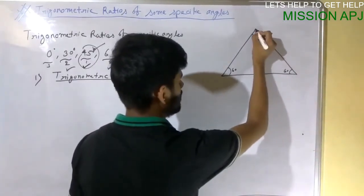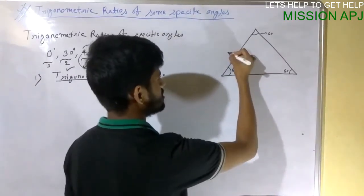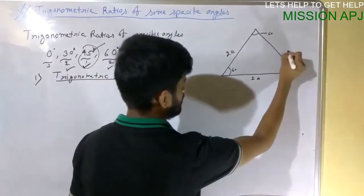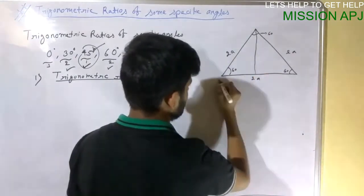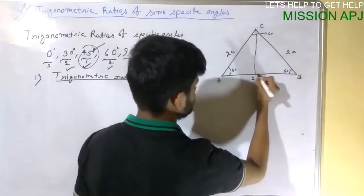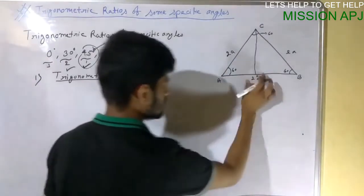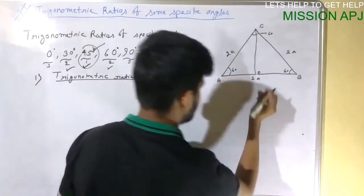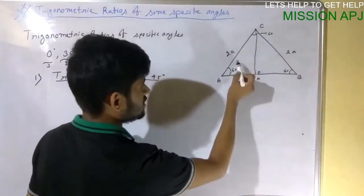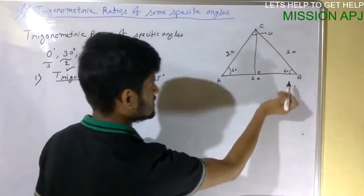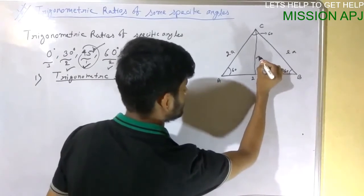Let us consider the side value of the equilateral triangle as 2a, 2a, and 2a. Now let us draw a perpendicular from the apex to the opposite side and name the foot O. Since each angle is 60°, all sides are equal, as you can see here. Now we need to find the length of this perpendicular side.